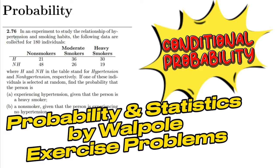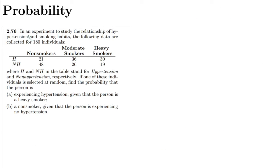Welcome back guys, this is question 2.76. The statement is that in an experiment to study the relationship of hypertension and smoking habits, the following data are collected for 180 individuals. H and NH stand for hypertension and non-hypertension, which you can see here — this is H, this is NH.